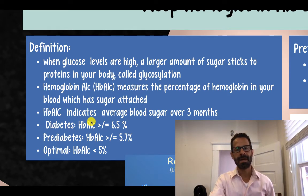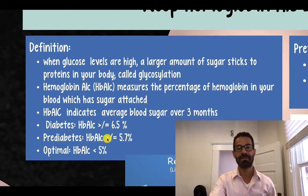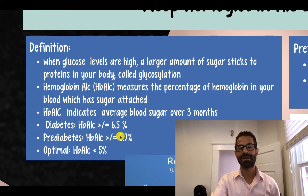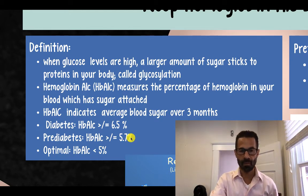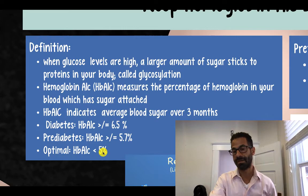A hemoglobin A1c of 6.5 or greater indicates a diagnosis of diabetes. Hemoglobin A1c of 5.7 to 6.4 indicates a diagnosis of pre-diabetes. The optimal range is less than five percent.